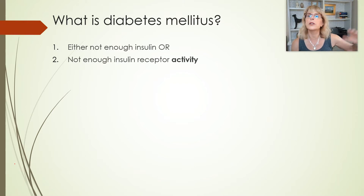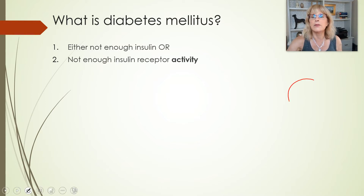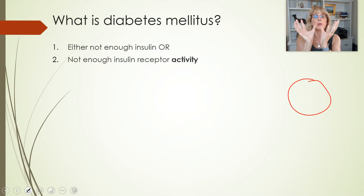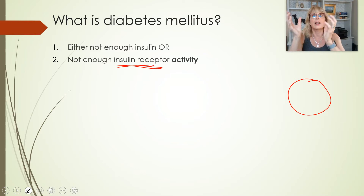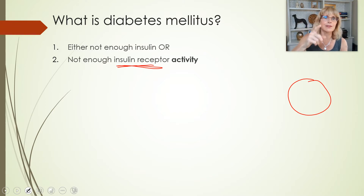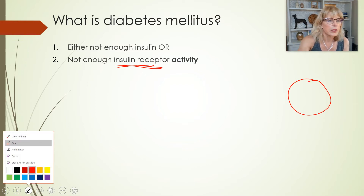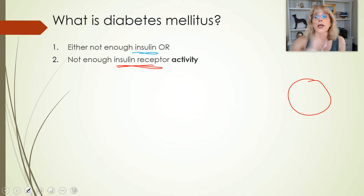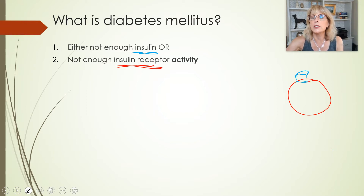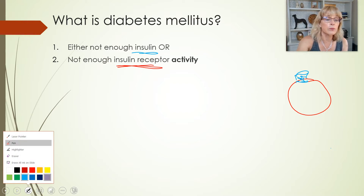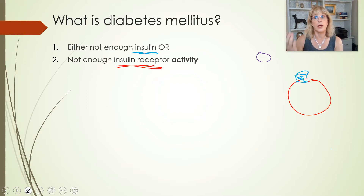We learned early in this series of lectures that any given cell is only going to be able to respond to a hormone if it has the proper receptor protein. The insulin receptor is the name for the protein that interacts with the hormone insulin. Remember that insulin is a water-soluble or hydrophilic hormone, and since it's a hydrophilic hormone, it is going to need a receptor on the surface of the cell, because being a water-soluble hormone, it's not going to be able to enter the cell.